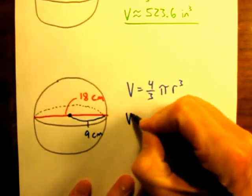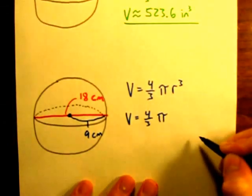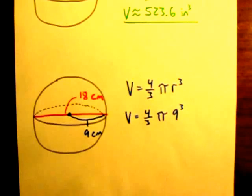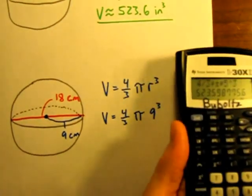So the volume is equal to 4/3 times π times the radius, 9 raised to the third power. And now, again, it's just simply a matter of entering that into our calculator.